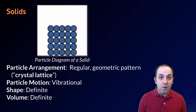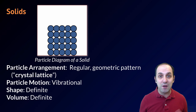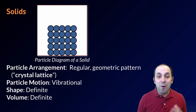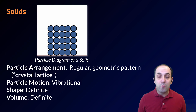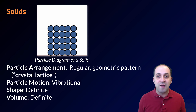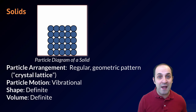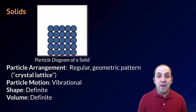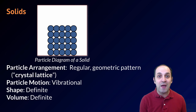In a solid, if we consider the particles arranged as a particle diagram, the particles are arranged in a regular three-dimensional structure — a geometric pattern we call a crystal lattice. Whenever you hear the phrase crystal lattice, they are referring to a solid. It's common to think that particles in a solid are not moving at all, but in reality particles are constantly moving at any temperature above absolute zero. In a solid, because particles are locked into that regular three-dimensional arrangement, they can only vibrate — so we describe their motion as vibrational. A solid has a definite shape and a definite volume and will not take the shape of any container it's in.